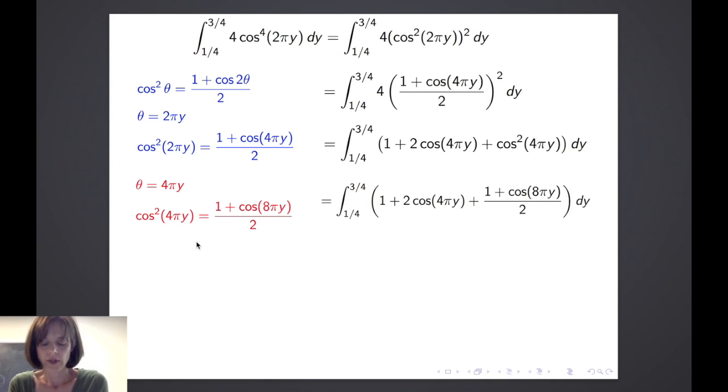We now transform our integral to be the definite integral from 1 fourth to 3 fourths of 1 plus 2 cosine of 4 pi y plus 1 plus cosine of 8 pi y all over 2 dy.